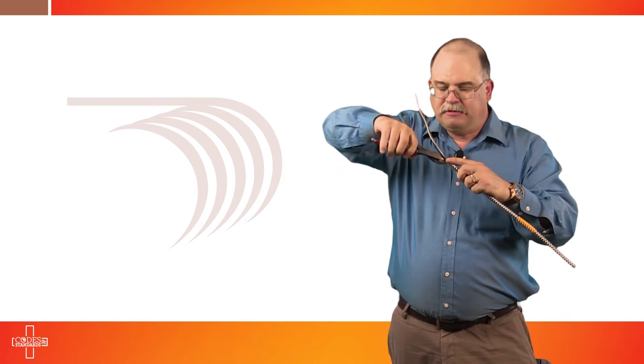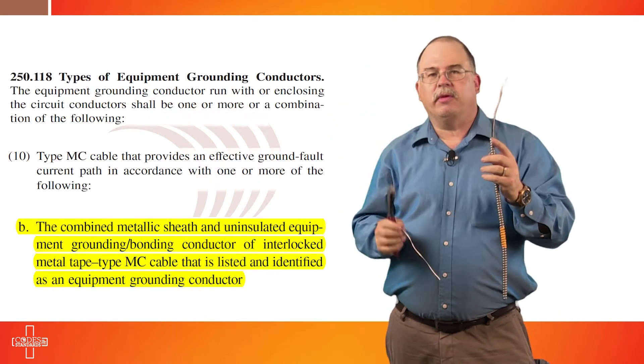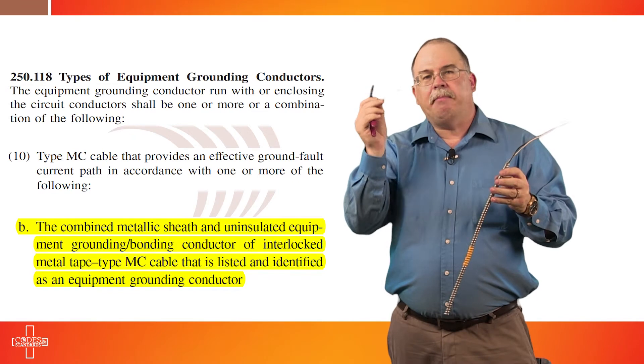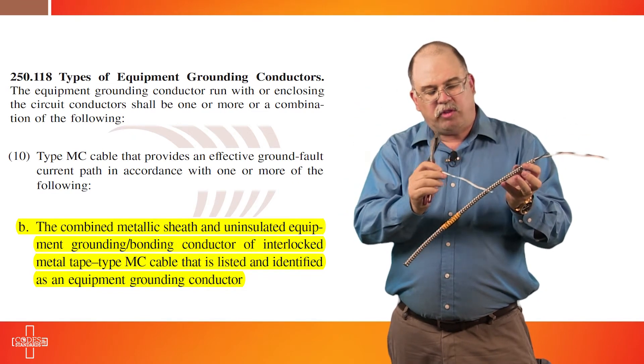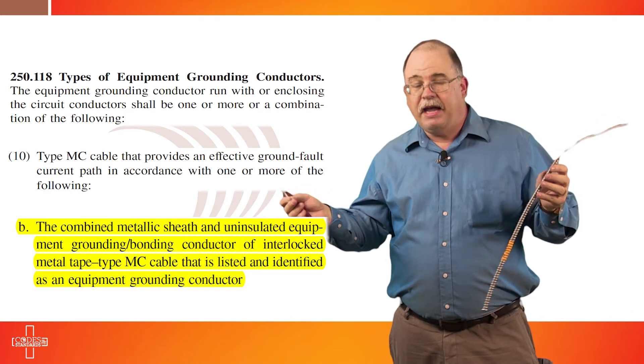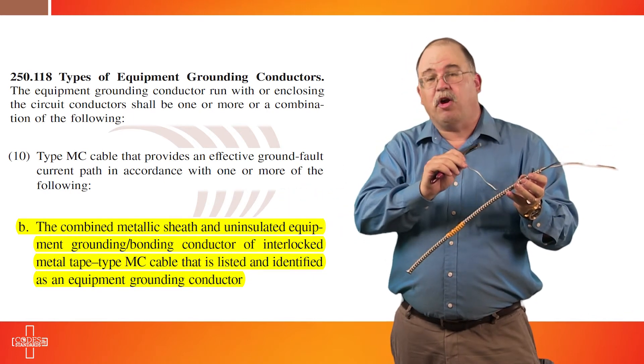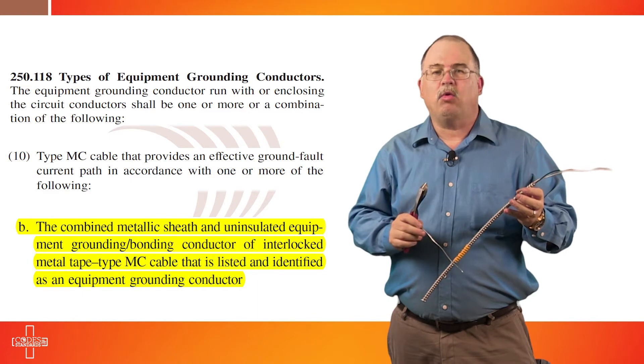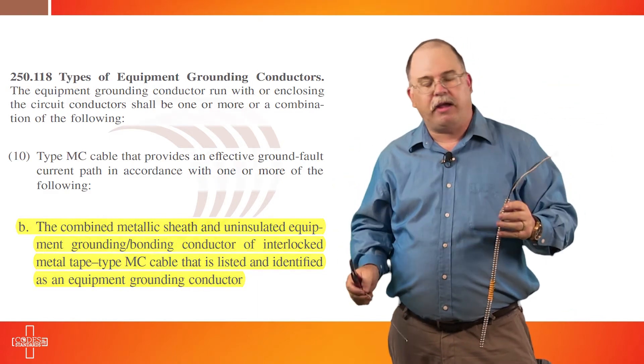You cut that off and you're done with that. The aluminum grounding and bonding conductor makes intimate contact with all of the convolutions through the entire length of the cable. In that way it is now an effective ground fault current path and will serve as an equipment grounding conductor in this type of product.